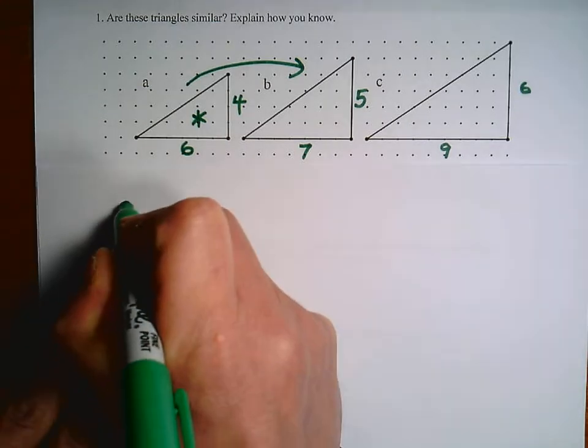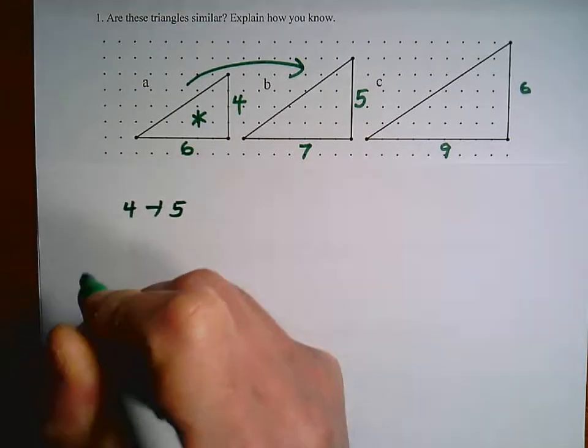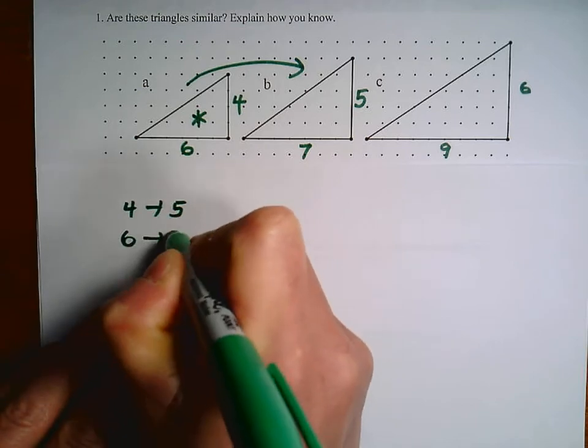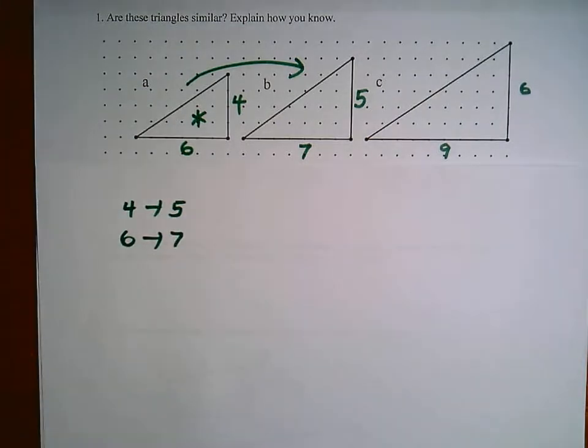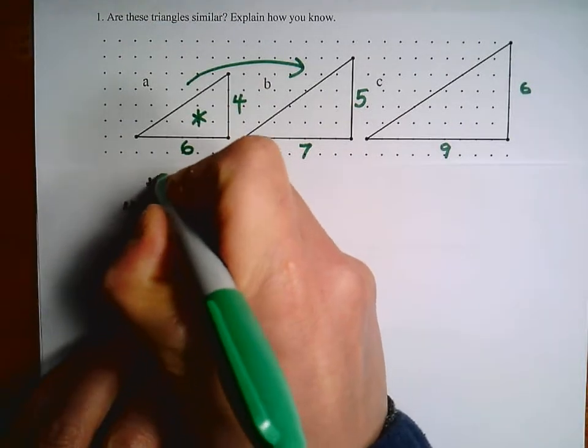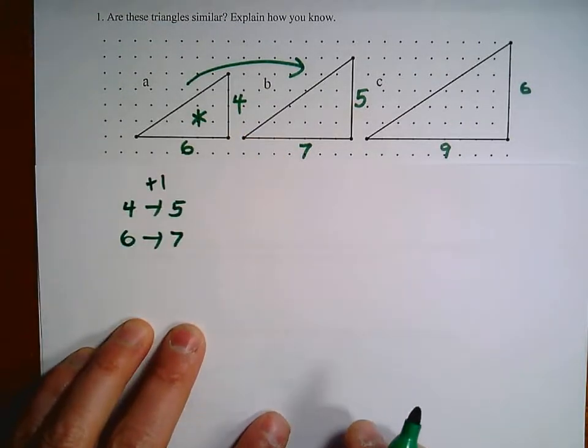So I might just write a couple of notes here. So four to five, six to seven. So we're comparing the corresponding sides. This looks like a plus one relationship, so we don't have similarity.